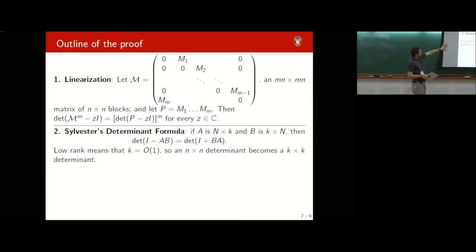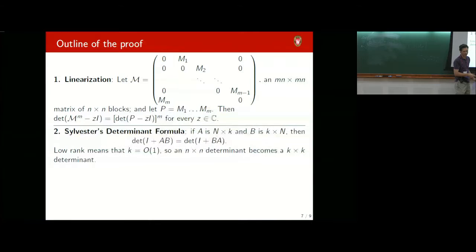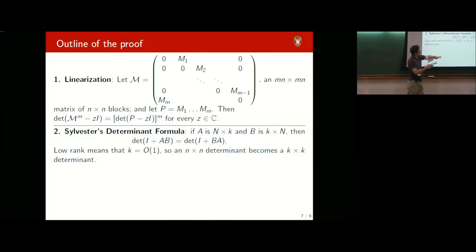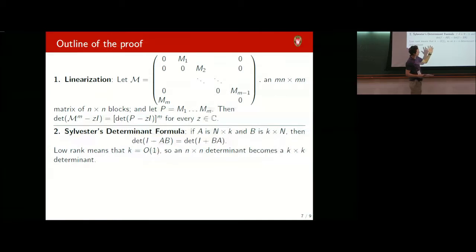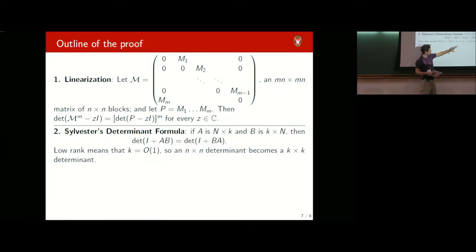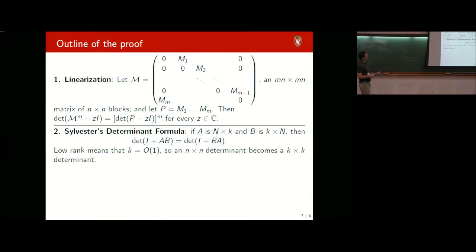The second step uses Sylvester's determinant formula: if A is N by K and B is K by N, then det(I + AB) = det(I + BA). The left side is a determinant of a huge N by N matrix, while the right side is just K by K — where K is a small constant (the rank of our perturbation). This transforms an enormous computation into a tractable one. We decompose the low-rank perturbation matrix into A times B of these shapes to apply this reduction.